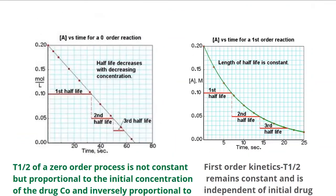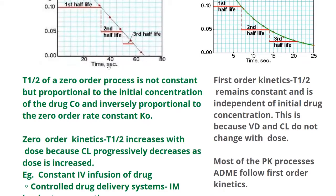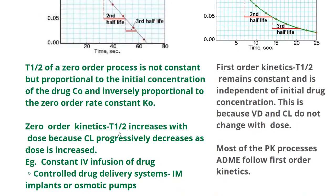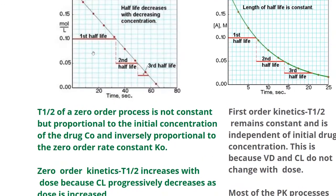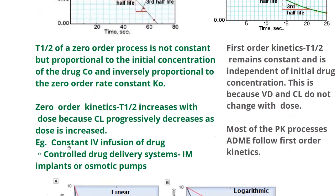Since I got this graph from the internet, the time is mentioned in seconds — normally for medicines it is in hours or minutes. This kind of very short half-life can be seen with radioactive compounds. The t½ of a zero order process is not constant but proportional to the initial concentration and inversely proportional to the zero order rate constant k₀. In zero order kinetics, t½ increases with dose because clearance progressively decreases. In practice, this requires constant IV infusion or controlled drug delivery systems like IM implants and osmotic pumps, which release the drug slowly over a long period of time.